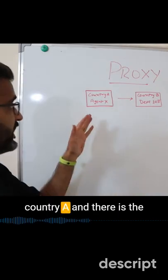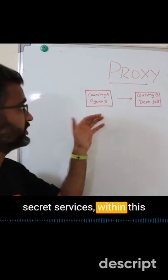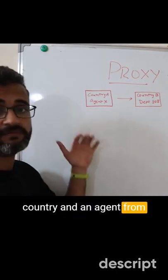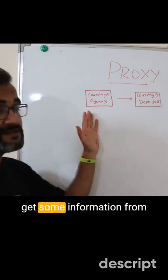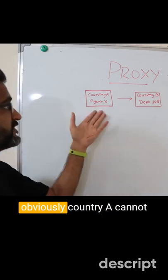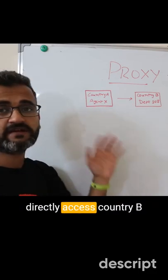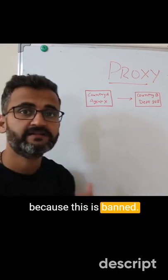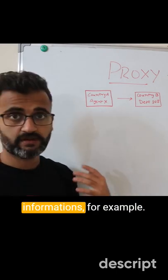Suppose there is Country A with secret services within this country, and an agent from that secret service wants to get some information from Country B, a specific department 108. But obviously Country A cannot directly access Country B because this is banned - this is restrictive information, for example.